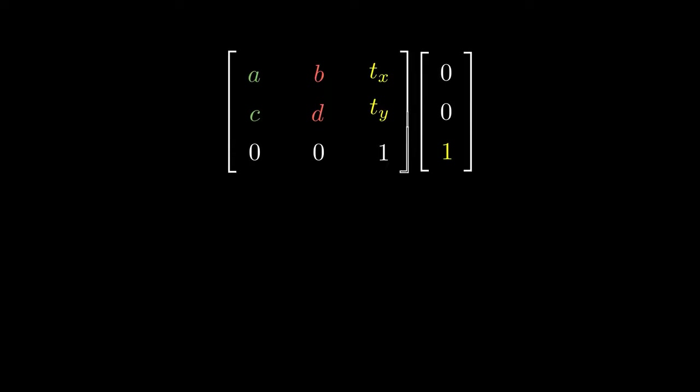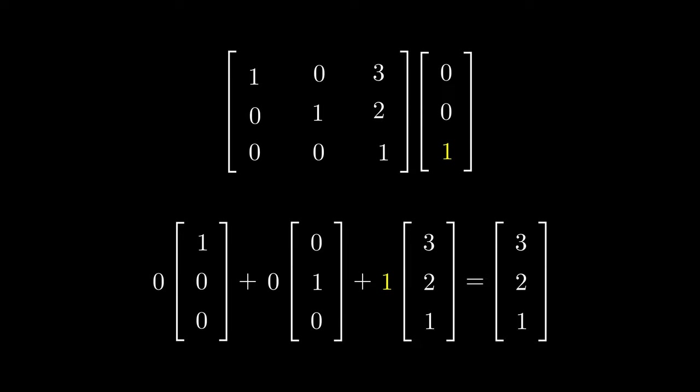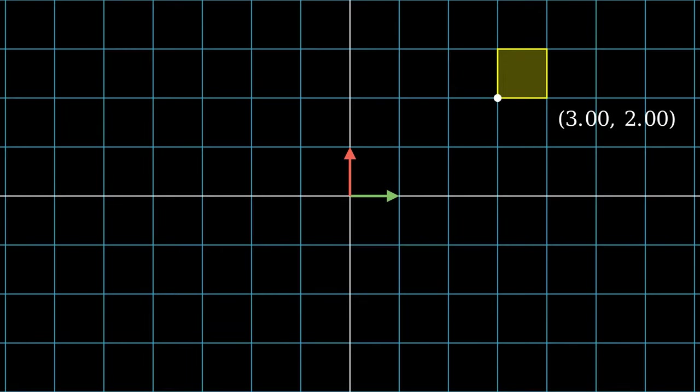Let's first write out the origin represented in homogeneous coordinates, then our transformation matrix. Since there are no other transformations, the top left 2x2 components are just an identity matrix. Since we are moving towards 3,2, so Tx equals 3 and Ty equals 2. After the multiplication, we got the correct coordinate 3,2 and we finish our translation.